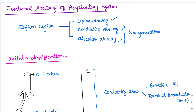The upper airway is nothing but the nose as well as the pharynx region. Then comes the conducting airway. As the name suggests, in the conducting airway only the air is conducted — there is no gaseous exchange. That's why it is called the conducting airway. Then comes the alveolar airway, which is involved in gaseous exchange.